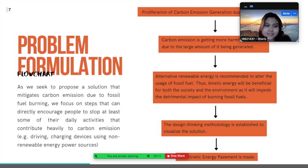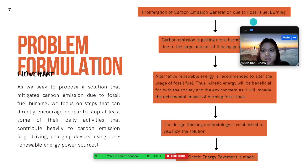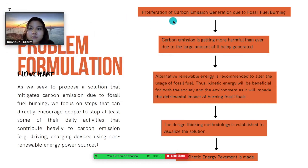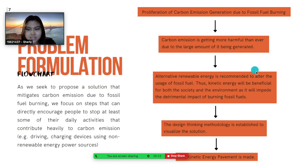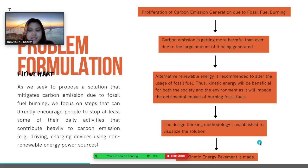For the problem formulation, we have made a flowchart as seen on the right side of the screen. We seek to propose a solution that mitigates carbon emissions due to fossil fuel burning, focusing on steps that encourage people to reduce daily activities contributing to carbon emissions — such as driving and using non-renewable energy sources. The flowchart steps are: proliferation of carbon emissions from fossil fuel burning; carbon emissions becoming increasingly harmful; alternative renewable energy recommended; kinetic energy beneficial for society and environment; design thinking methodology established; and finally the kinetic energy pavement is made.